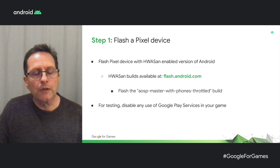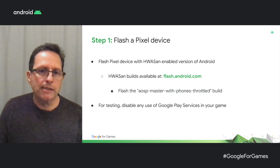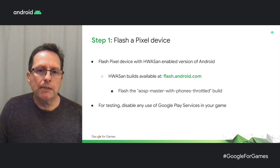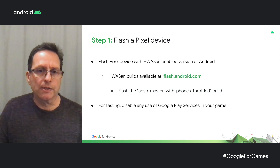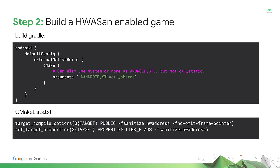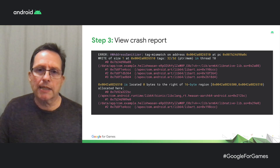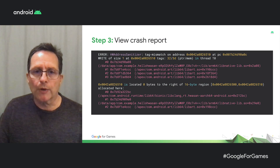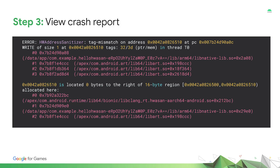Here are the steps to use Hardware ASAN. First, flash a Pixel device with a Hardware ASAN version of Android. You can get this at flash.android.com — look for the AOSP master with the phones throttle build. You want to disable any use of Google Play services, since it isn't compiled for Hardware ASAN. Next, build a Hardware ASAN enabled version of your game by modifying the build.gradle and CMakeLists.txt files. Finally, when Hardware ASAN detects that a bad memory pointer is used, the game will crash. You can view the logcat output to see where the bad memory access occurred, and also a stack trace of the original allocation or deallocation, in the case of use-after-free bugs.